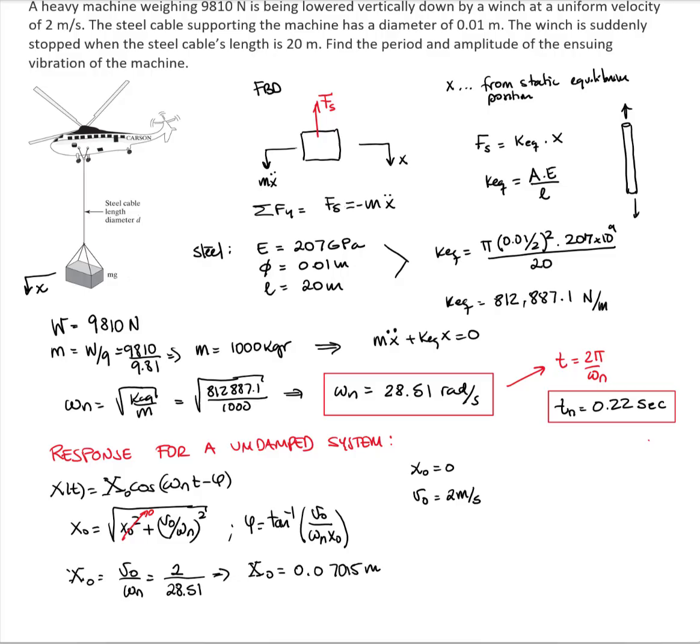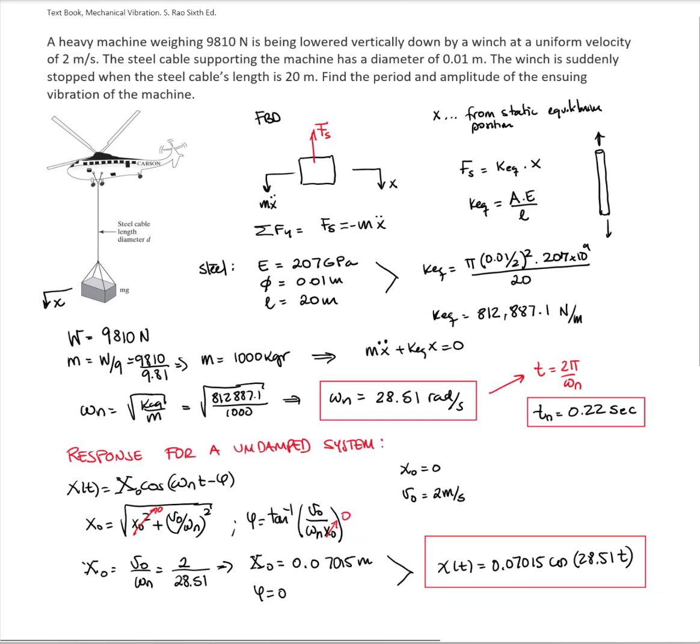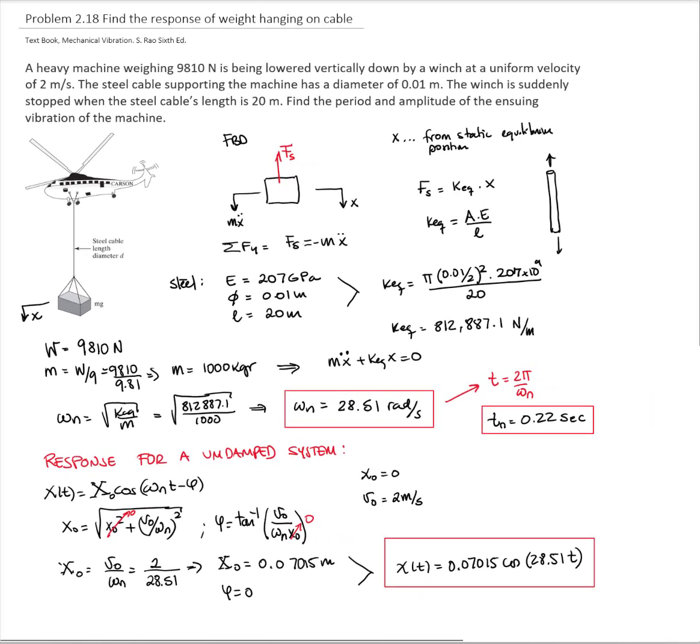And the phase angle, since x0 is equal to 0, the phase angle is equal to 0. That gives me a response of x(t) equals 0.0701 cosine of 28.51t. And this is the solution to this problem.